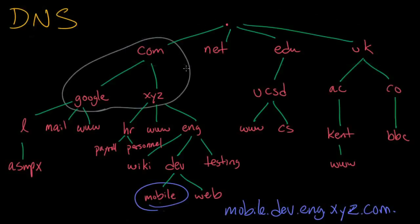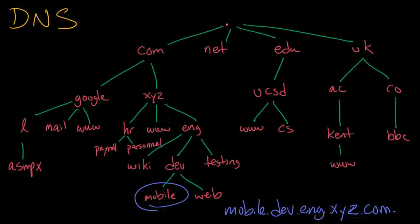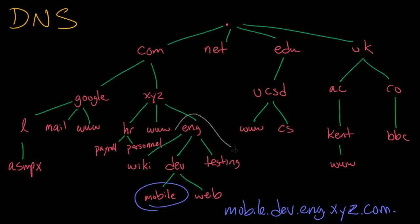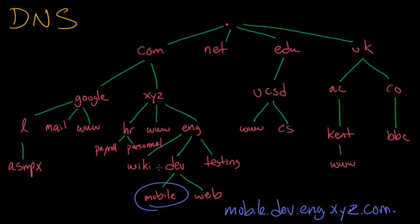The name servers for the com domain look at the query and see that it's going to the xyz.com domain, so it hands off the query to the next zone down. The query now goes to the name servers for the xyz.com zone and it sees that it needs to go into eng. So the query gets handed down to the eng.xyz.com zone. From there, it goes to the dev.eng.xyz.com zone and the answer is found.